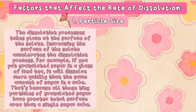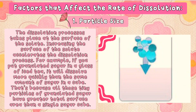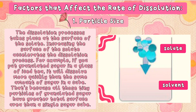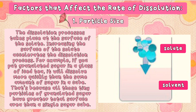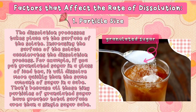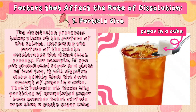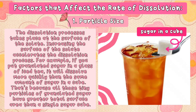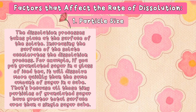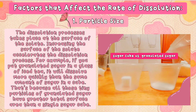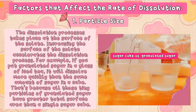The dissolution process takes place at the surface of the solute. Increasing the surface area of the solute accelerates the dissolution process. For example, if you put granulated sugar in a glass of iced tea, it will dissolve more quickly than the same amount of sugar in a cube. That is because all those tiny particles of granulated sugar have greater total surface area than a single sugar cube.